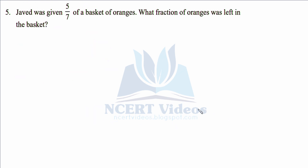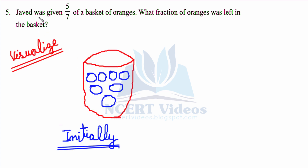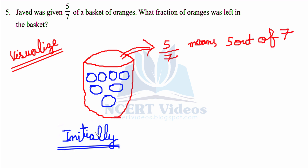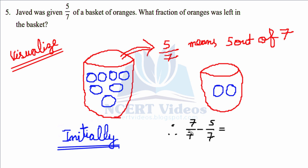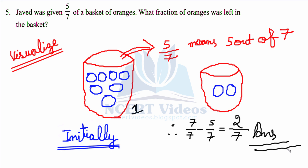Question 5: Javed was given five sevenths of a basket of oranges. What fraction of oranges was left in the basket? Initially there were seven out of seven oranges, representing one full basket. When five out of seven were given to Javed, two out of seven remain. So: one basket equals seven over seven; five over seven were given; therefore two over seven were left. That is your answer.